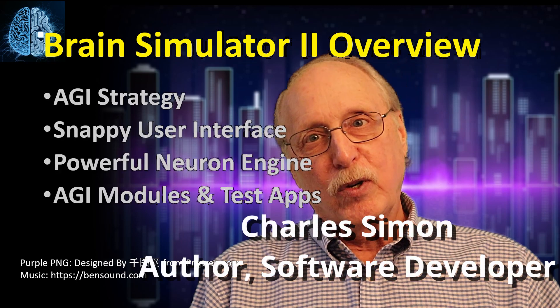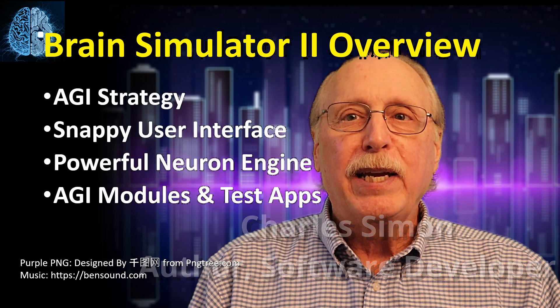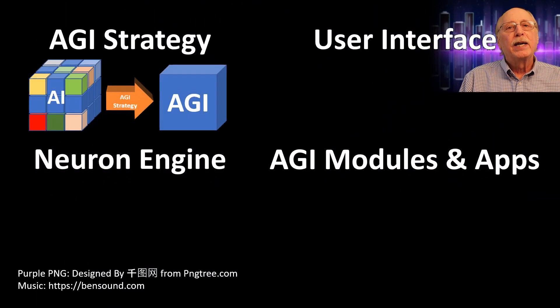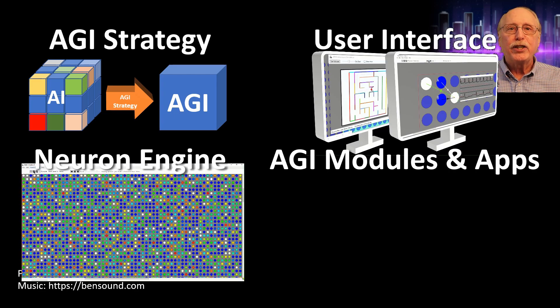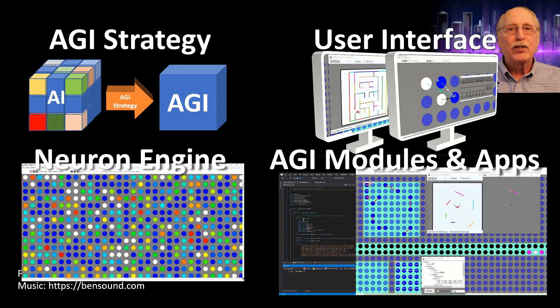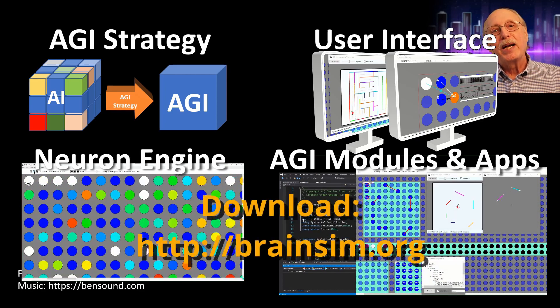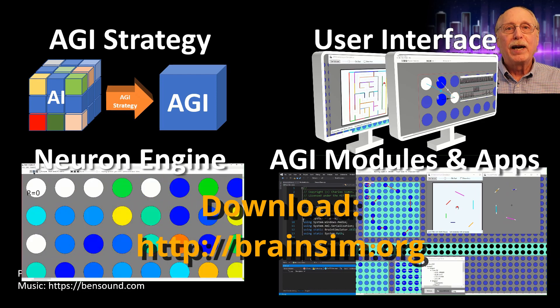I'd like to introduce the new open source software project Brain Simulator 2. It's a spiking neural simulator with a strategic approach to AGI, a snappy user interface, a powerful neuron engine, and the added ability to easily create custom modules to perform any desired function and combine them into test applications. Many are included free with the download.